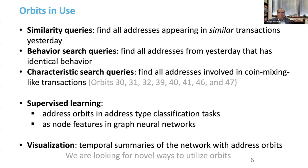One problem with Bitcoin data is that the data is so big. If you go to a blockchain explorer, they will show you only a portion — one address and its immediate transactions — but never the full picture. By using orbits, we can show this full address. We have also used orbits in volatility analysis published in finance journals, and for clustering and so on.